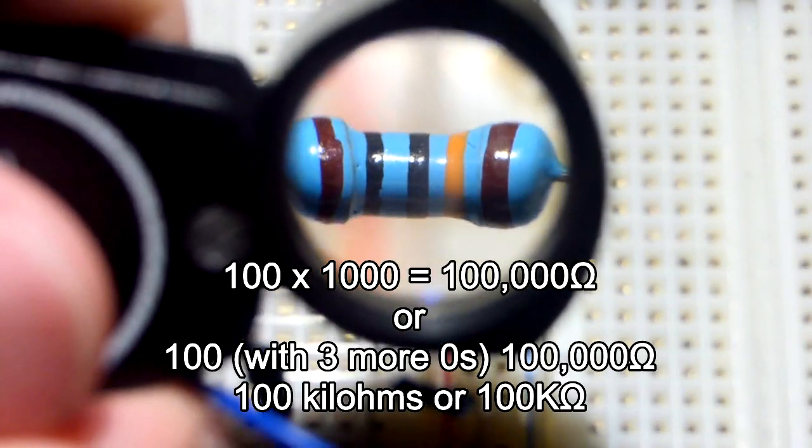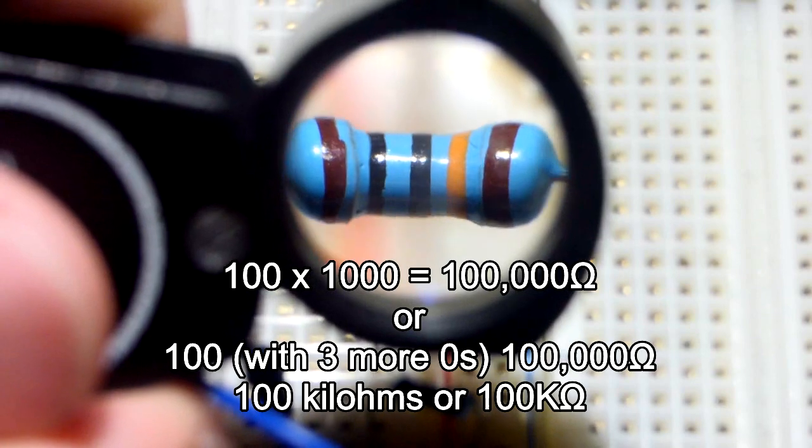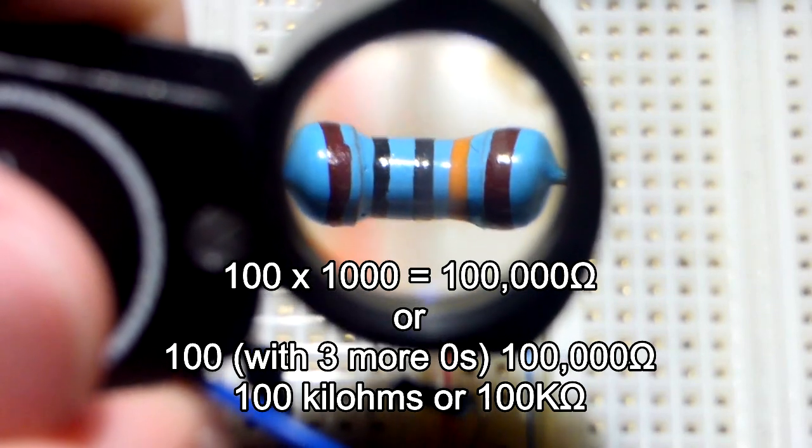Now we have orange is 3, so 1, 0, 0, and then 3 more 0s for 100,000.